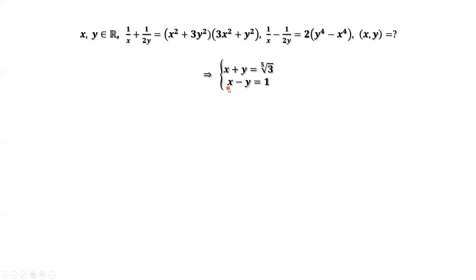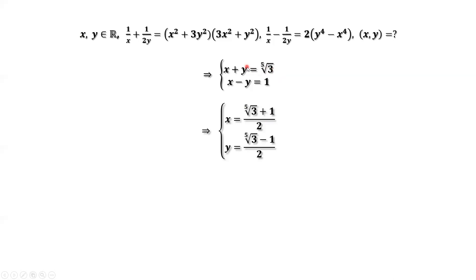We have two results: X plus Y equals the fifth root of 3, and X minus Y equals 1. Adding the first result and the second result, we have 2X equals the fifth root of 3 plus 1. This implies X equals the fifth root of 3 plus 1, divided by 2. That's all.